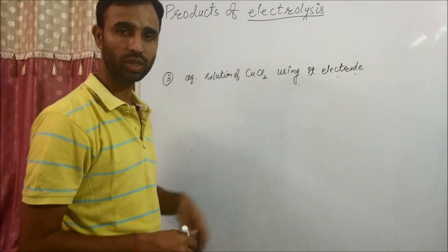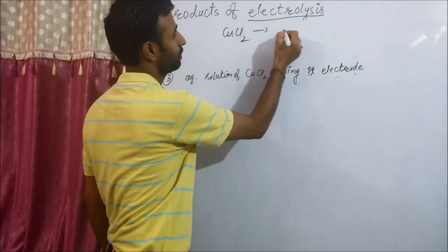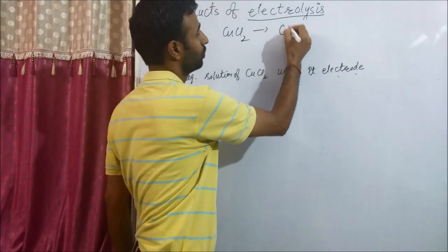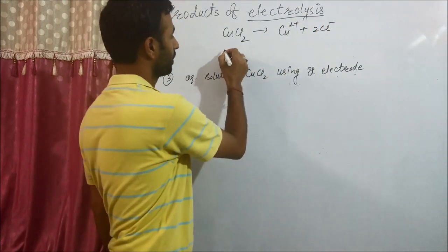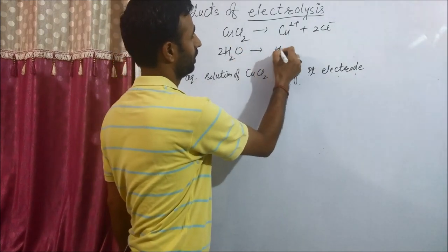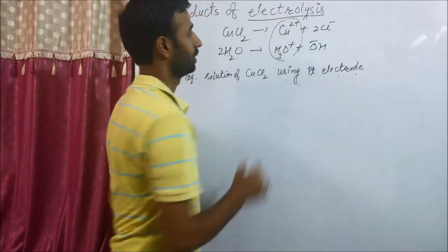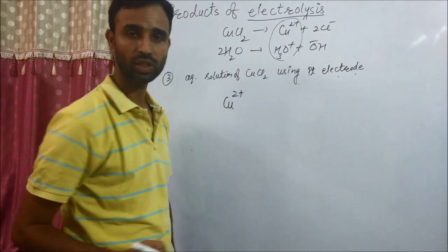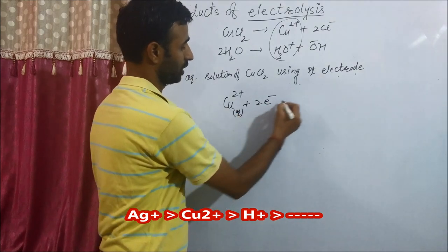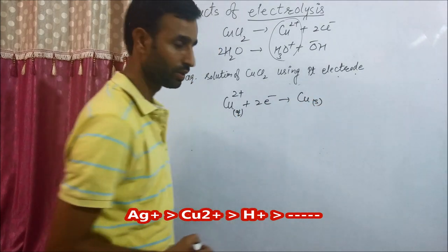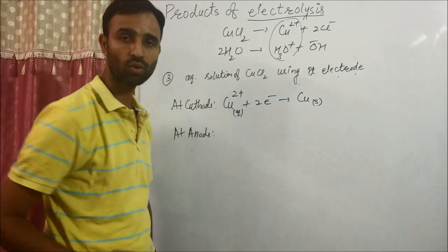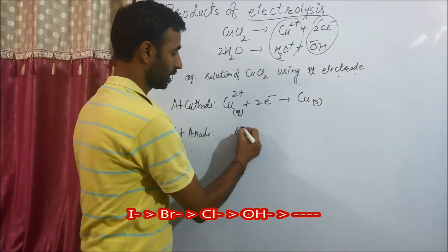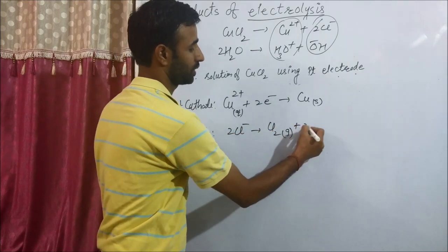Third: aqueous solution of CuCl₂. CuCl₂ gives Cu²⁺ and Cl⁻; water gives H₃O⁺ and OH⁻. Out of Cu²⁺ and H₃O⁺, as per the order Cu²⁺ gains two electrons and we get Cu solid at cathode. At anode, out of Cl⁻ and OH⁻ ion, as per the order Cl⁻ ion gives Cl₂ gas plus two electrons.